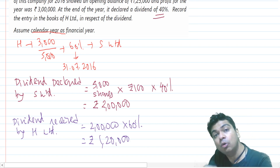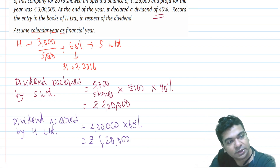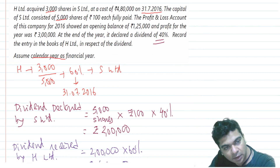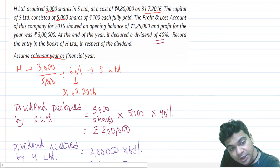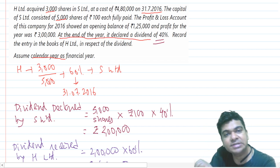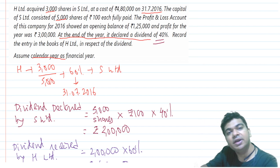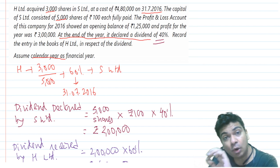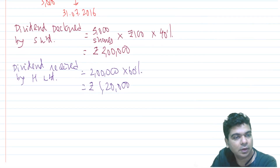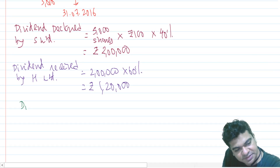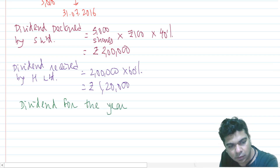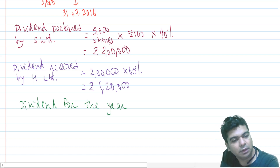The amount of dividend received by the parent is Rs. 1,20,000. We are supposed to record an accounting entry in the books of the parent, so we will analyze for the parent. We have to now find out for what period the dividend has been paid. If we see the question, they are saying at the end of the year it declared a dividend. If you are declaring dividend at the end of the year, obviously that dividend is for the current year. So this dividend is for the current year — dividend is for the year.